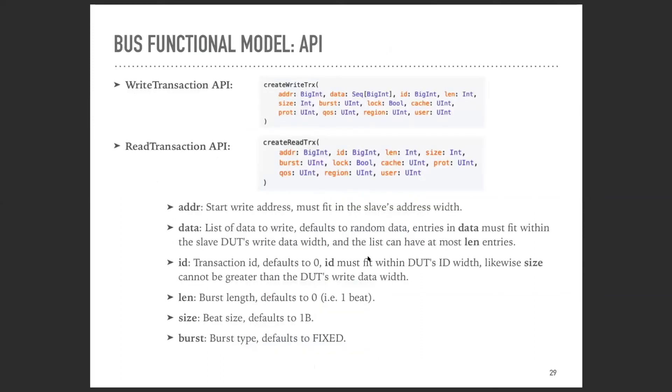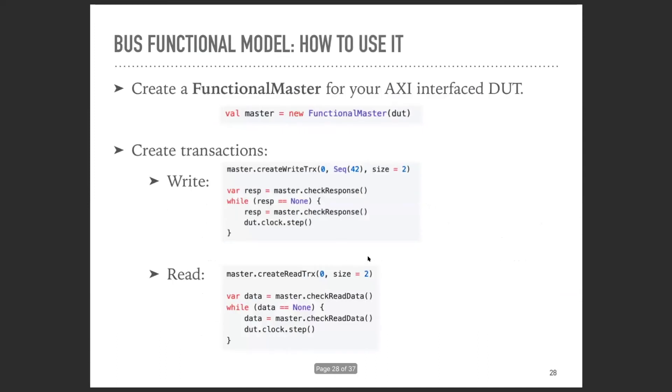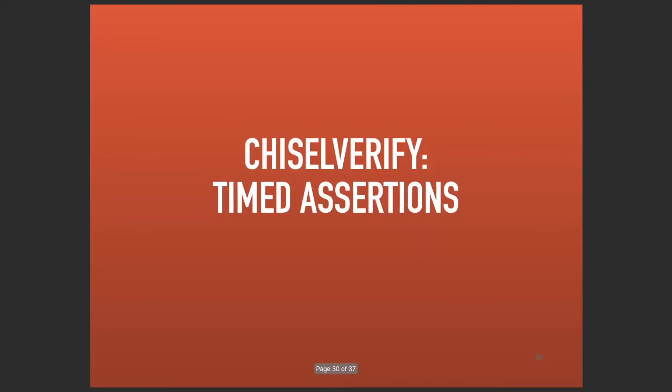It's very customizable. We have all these different options we can use, but we can also just write as we did here, where we have our write transaction which takes an address, a value, and the size. That was bus functional models.